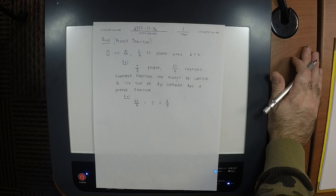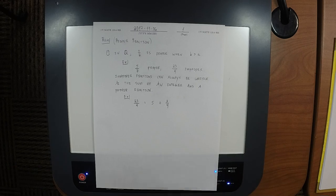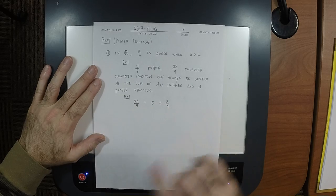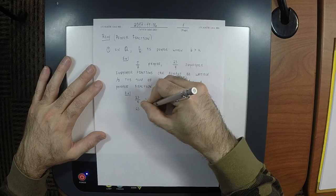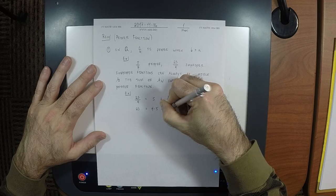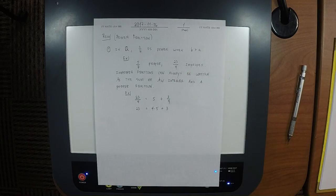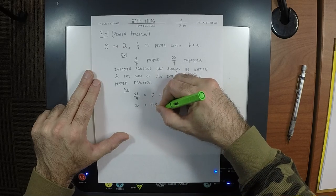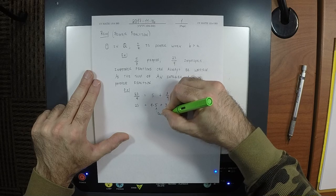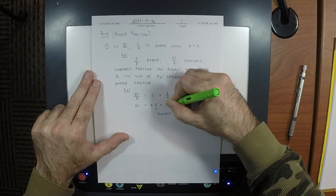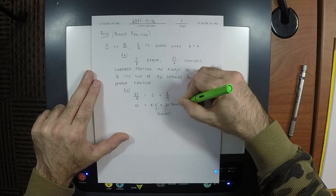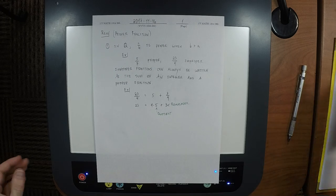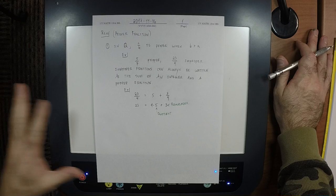If we multiply both sides of this equation by 4, it would read: 23 is 4 multiplied by 5 plus 3. This is exactly the form of the division algorithm — saying that 23 divided by 4 has quotient 5 and remainder 3. So this notion of proper and improper is tied directly to the notion of quotient and remainder.